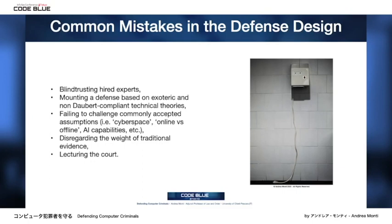Traditional evidence — fingerprints, tailing people, witness statements — remains very important. A counsel can build a highly complex technical defense that can be destroyed by a simple old-school police investigation. The bigger mistake, though, is lecturing the court. As a rule of thumb, courts do not like when a lawyer plays smart. A judge might not be skilled enough in the complexities of computer crimes, and therefore it might be necessary to introduce technical facts in the trial, but this should be done with a lot of care.